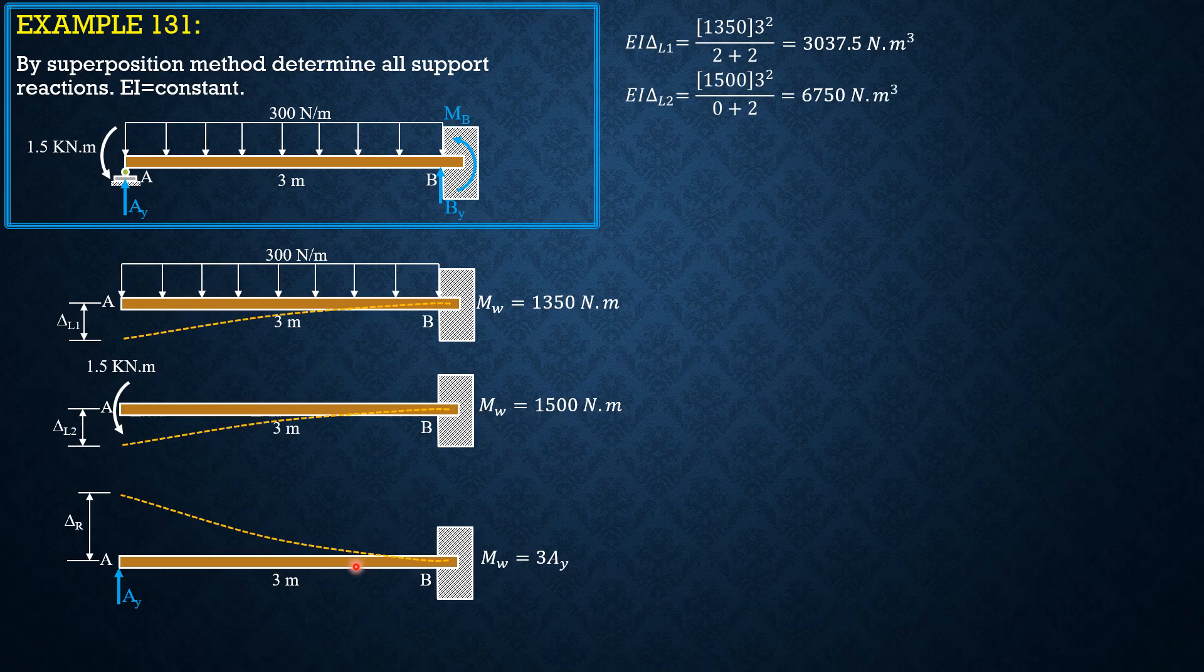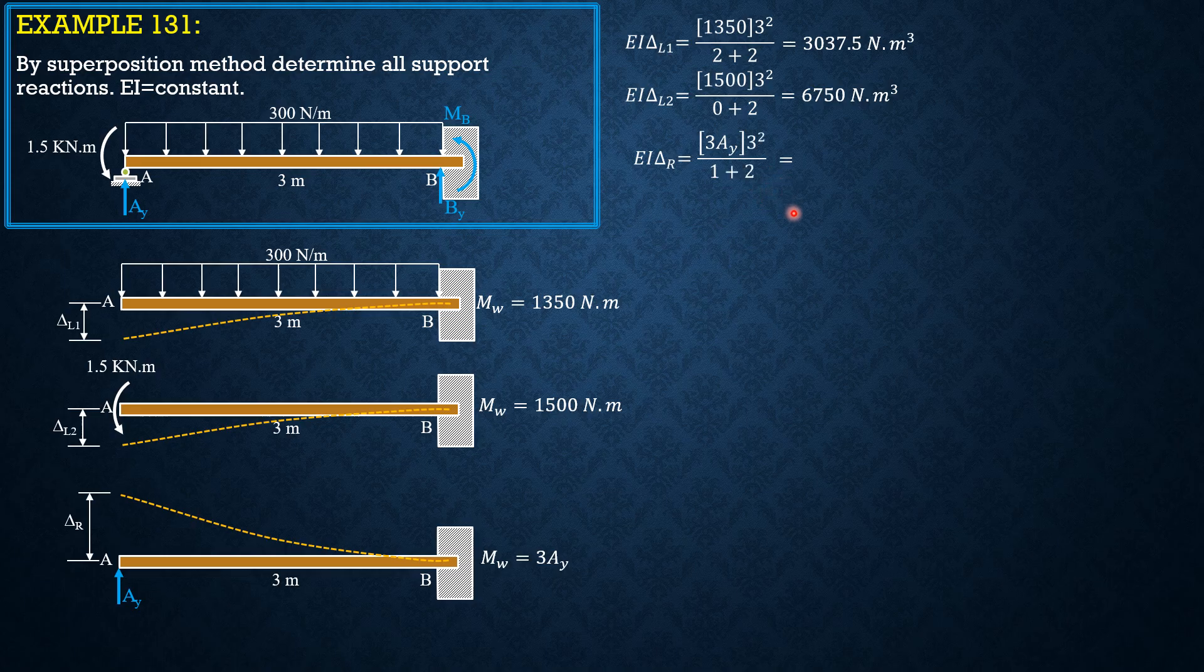Then for the reaction, EI delta R is equal to 3AY times 3 squared over first degree plus 2. So it is 9AY.